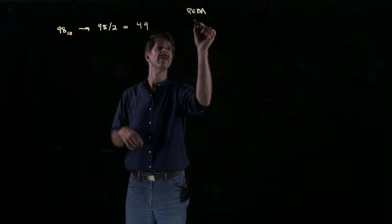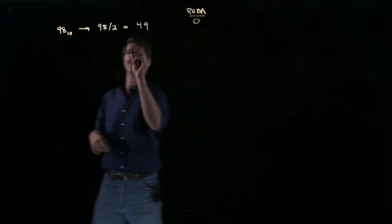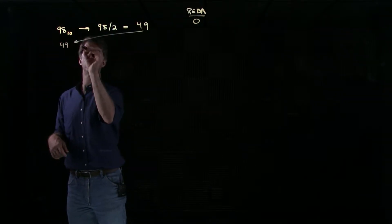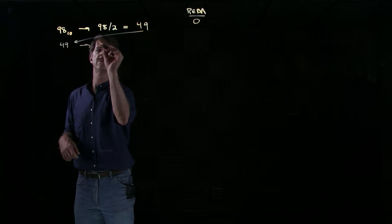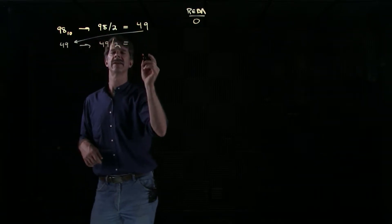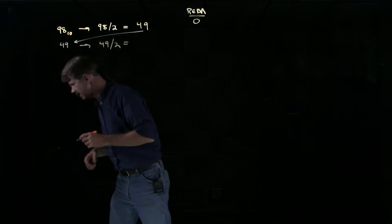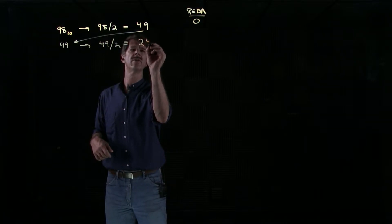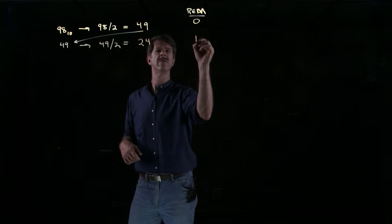Remainder, zero, because that was an even number. Then we take the 49, bring it back here, divide it by 2. That's going to give us 24 with a remainder of 1.